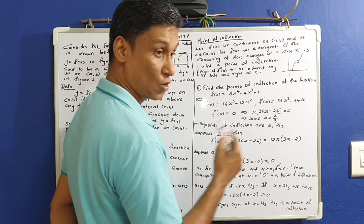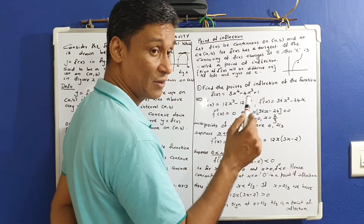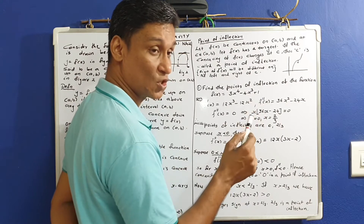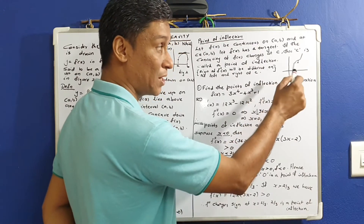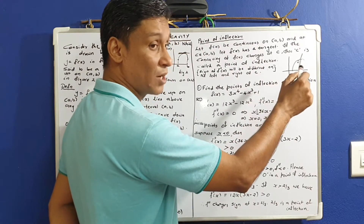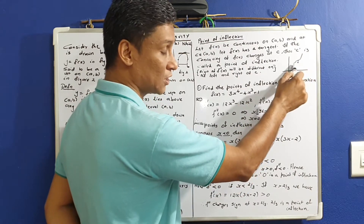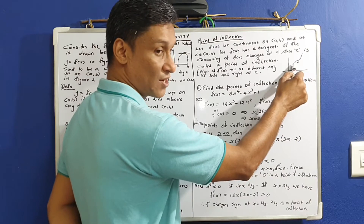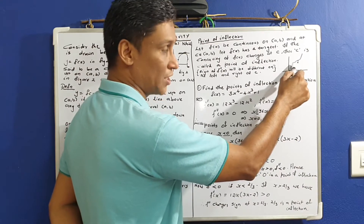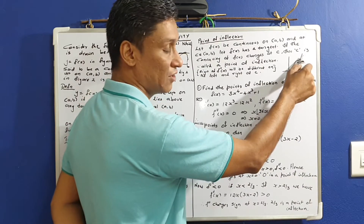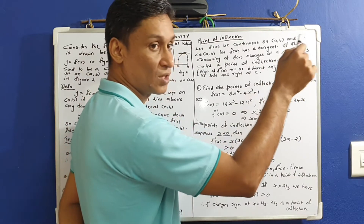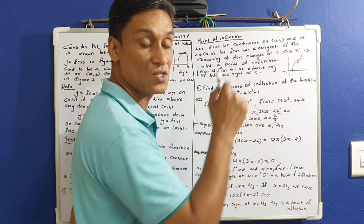If the concavity of f of x changes at c, then c is called the point of inflection. That is, the sign of f double dash x will be different on the left and right of c. If we test: f double dash x less than 0 on one side, then f double dash x greater than 0 on the other side.